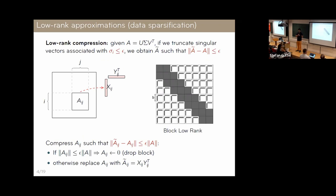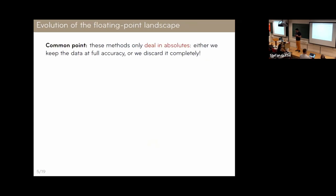In the applications I'm considering — solution of linear systems — the matrix A is usually not globally low rank, but it often has a block low-rank structure for many applications. The off-diagonal blocks are indeed low rank. For those familiar with hierarchical matrices, this is basically the same idea. I'm going to focus on the simpler BLR (Block Low-Rank) format here.